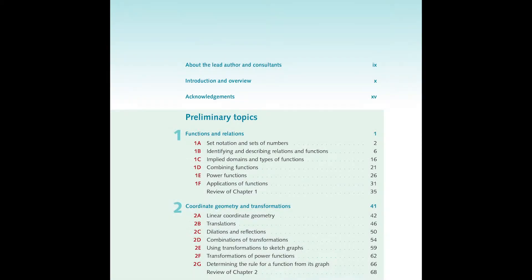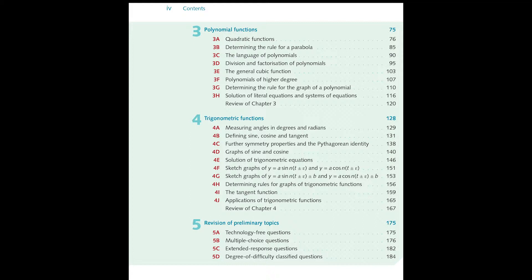In Year 12 the system is a little bit different. Unit 3 and Unit 4 are very carefully delineated because of QCAA requirements and the exams at the end of Unit 3 and Unit 4. At the beginning of the book there is some material which enables the student to review their Year 11 work and then proceed into Unit 3. At the end of Unit 3 there's a revision chapter which enables the student to prepare for the examination for Unit 3.